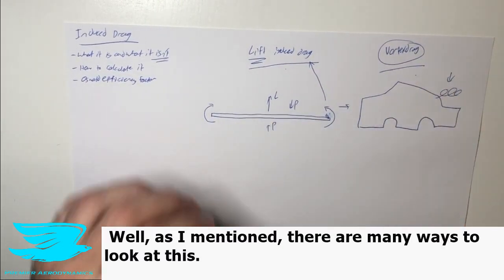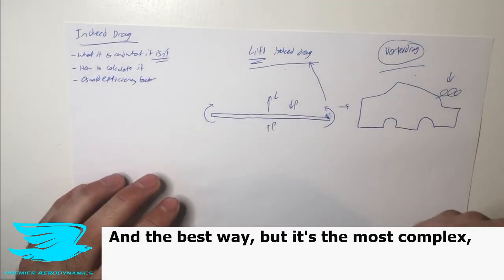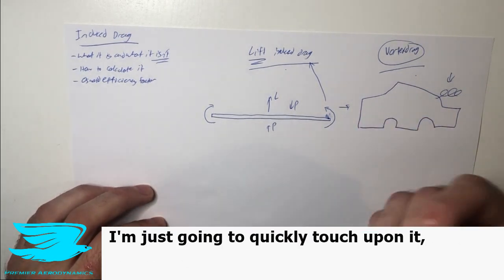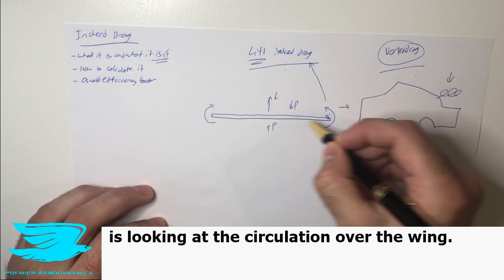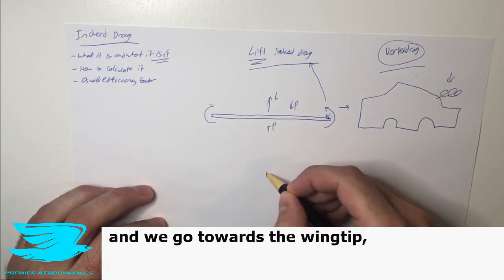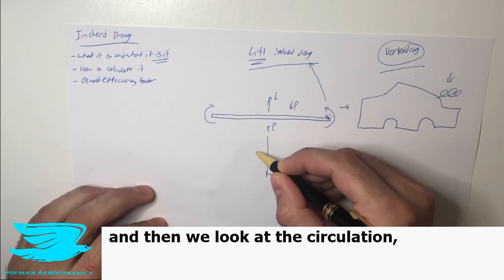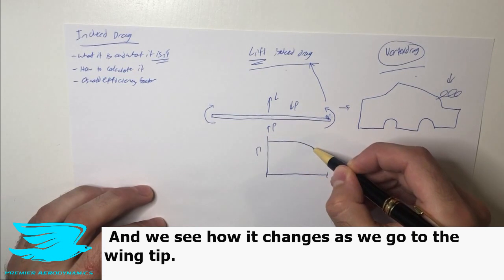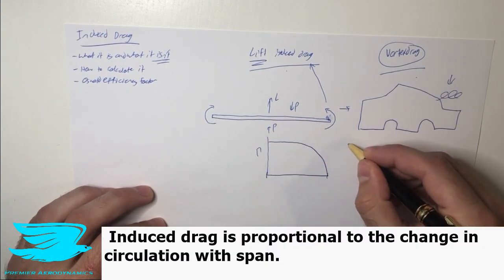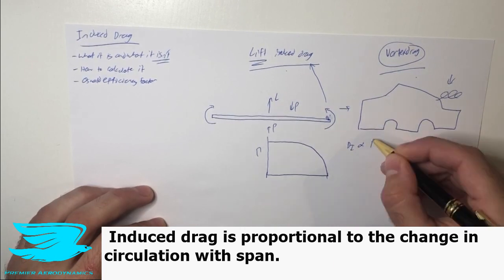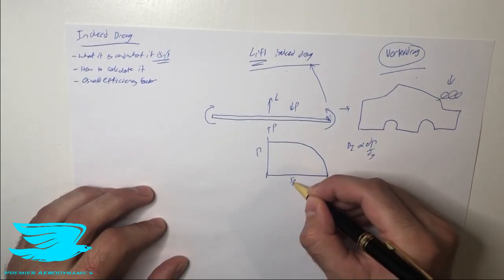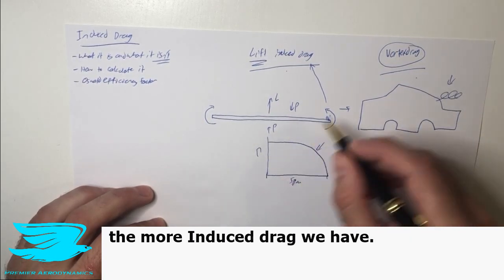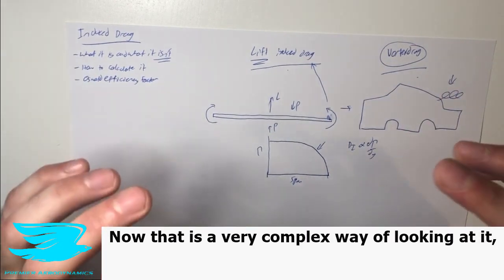So how do we calculate it? Well, as I mentioned, there are many ways to look at this. And the best way, but it's the most complex, which we're not going to go through in detail in this, I'm just going to quickly touch upon it, is looking at the circulation over the wing. So if we look at the wing root and we go towards the wing tip, and then we look at the circulation. And if you know what circulation is, check out this video here. And we see how it changes as we go to the wing tip. The induced drag is proportional to the change in circulation with span. So in other words, the sharper this drop off is, the more induced drag that we have. Now that is a very complex way of looking at it.